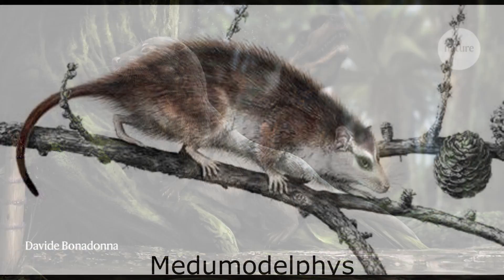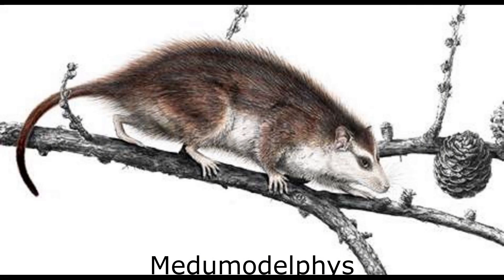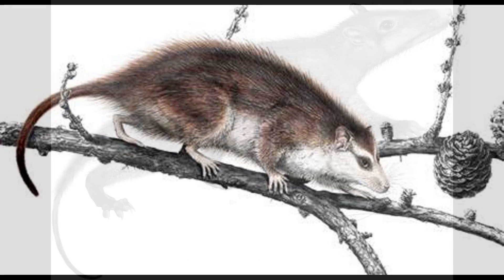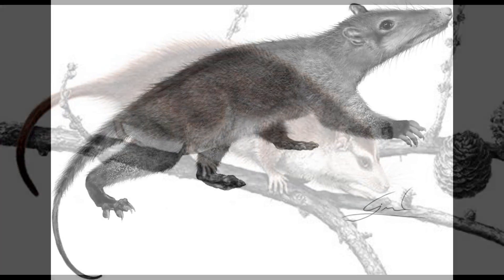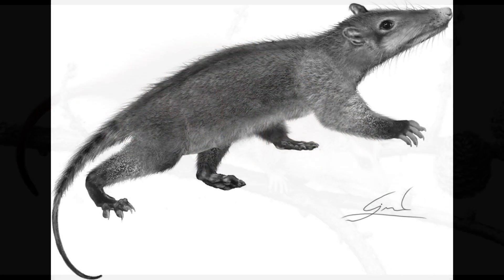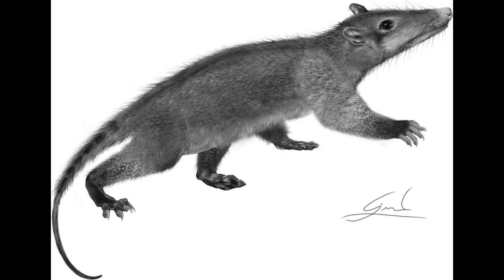At early Oligocene Fayoum, only a single genus of metatherian has been recovered: the Afrodelphimorph Medumodelphys. This small, likely nocturnal omnivore, known only from jaws and teeth, seems to have been arboreal.